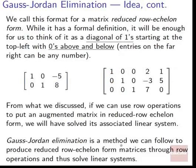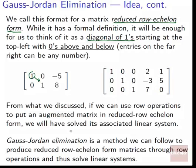We call this format reduced row echelon form. Echelon has to do with a triangle shape — the rows are arranged in a triangle, reduced because they all start with ones and have zeros. The formal definition isn't critical; just think of it as a diagonal of ones starting at the top left and continuing diagonally, with zeros above and below that diagonal.